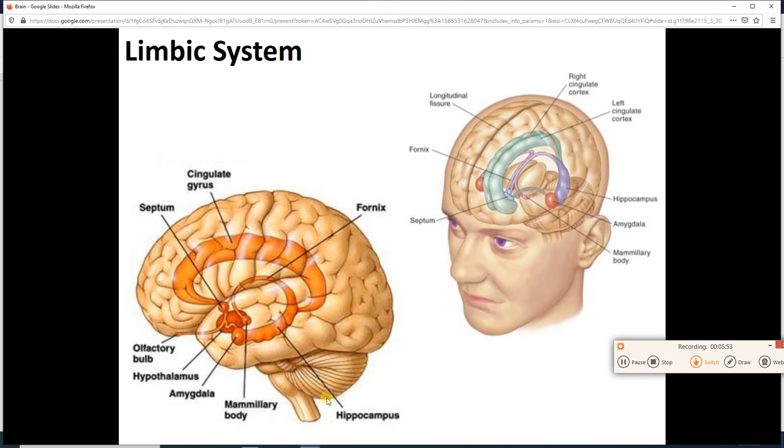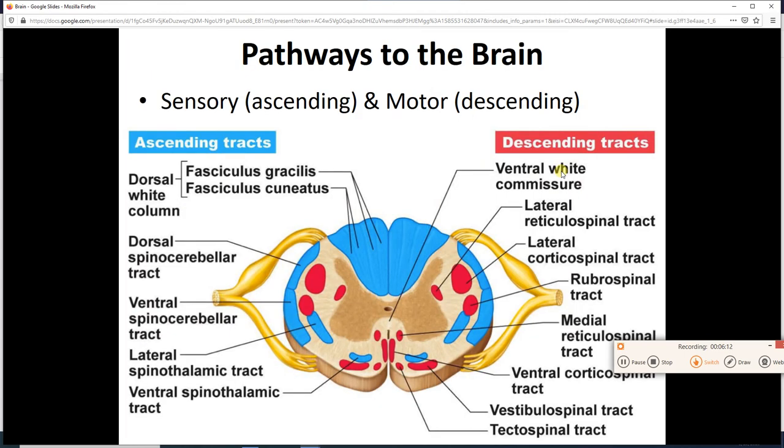Remember the fornix from lab? The fornix is this white matter that's going to connect the mammillary bodies to the hippocampus. All of these guys are collectively your limbic system.